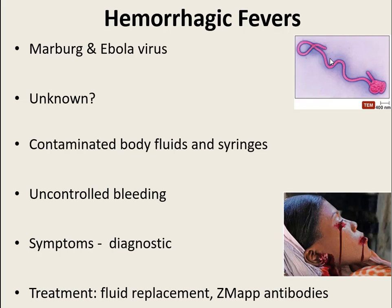Both Marburg and Ebola target the liver and destroy it — the liver essentially becomes a pile of goo. Because so much blood goes through the liver getting filtered, when it's destroyed it causes uncontrolled internal bleeding that then presents externally. Symptoms start with basic flu-like signs. Treatment includes fluid replacement and genetically engineered antibodies called ZMapp antibodies, which are showing good promise. Marburg and Ebola have a pretty high death rate.